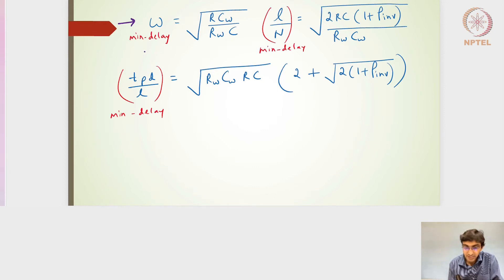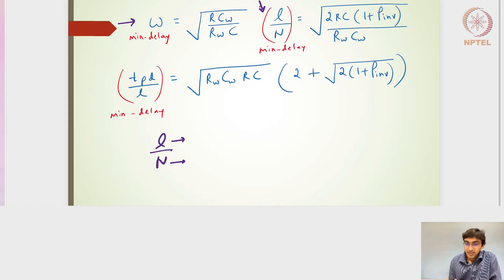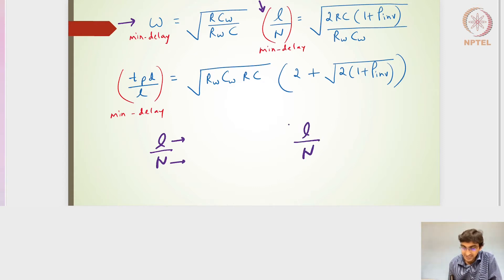This is the overall width parameter, and the overall L/N — where N is the number of segments and L is the overall length of the wire connecting the driver and receiver. So L/N gives the minimum delay expression. This is the optimum W and optimum L/N value. If I do N such segments, I can find the best L/N, and for obtaining the minimum delay this will be a constant value.